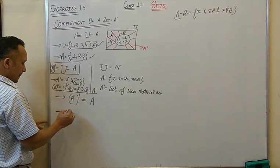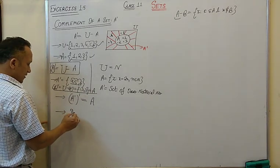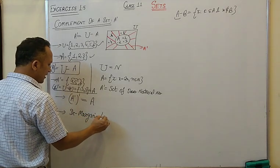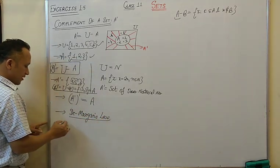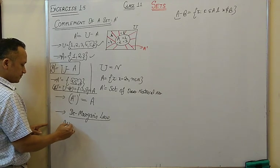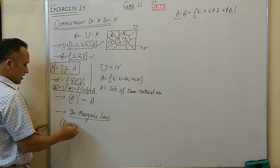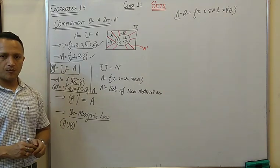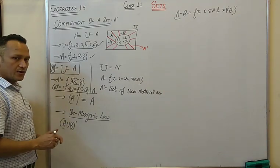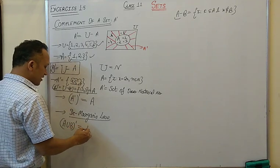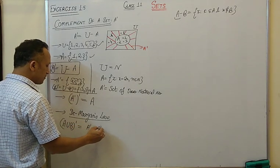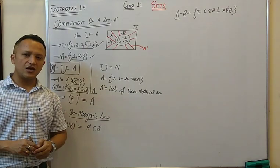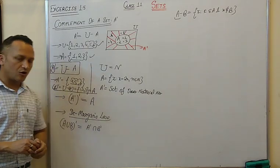The next law is called De Morgan's Law. According to De Morgan's Law: A union B whole complement is equal to A complement intersection B complement. That is, (A∪B)' = A' ∩ B'. You have to learn this law.